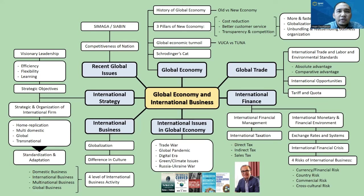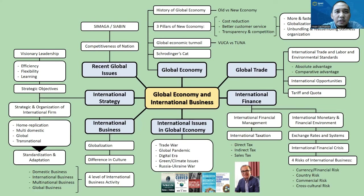In our last meeting, we discussed several global issues currently happening. First, about the competitiveness of nations, which makes some countries more prosperous than others. Prosperity of a nation could be either inherited or created. Inherited means the country has natural resources on their land, but unfortunately this could diminish at any time in the future and the country might become poor. On the other hand, if prosperity is created, it means the country has found its own strength and turned it into something successful.